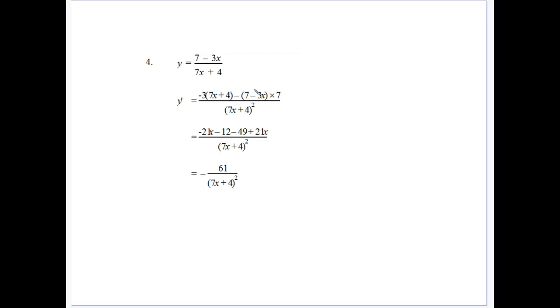So again, these ones are not too bad. We can clean it up. So minus 7, 21x, minus 12. Minus 7 times the 7 gives us 49, and minus 7 times minus 3 gives us 21x. And our 21x's cancel.